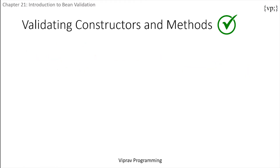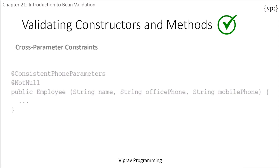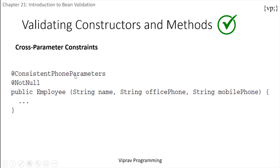Then there are cross-parameter constraints. These constraints apply to multiple parameters. Here the parameters in the employee constructor have the @ConsistentPhoneParameters and the @NotNull constraints.